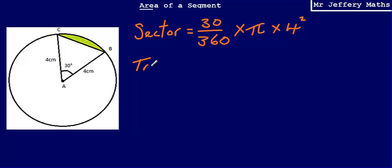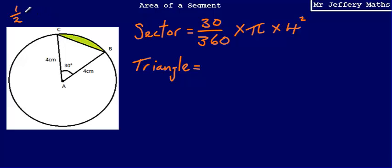Next I'm going to work out the area of the triangle. The problem is I don't know the height, so I can't use half base times height. Instead, I need to use a different formula: half ab sine c. This formula works when you don't know the height of a triangle.